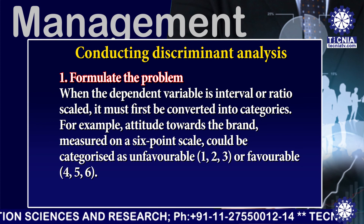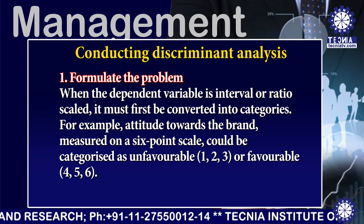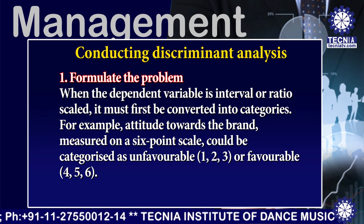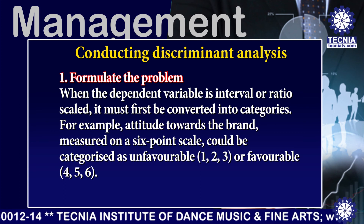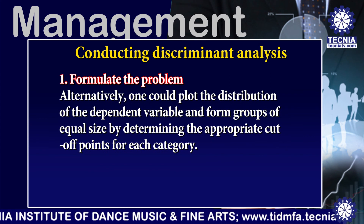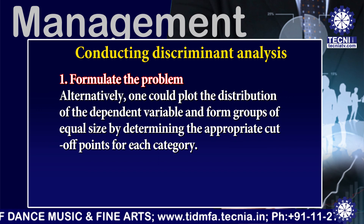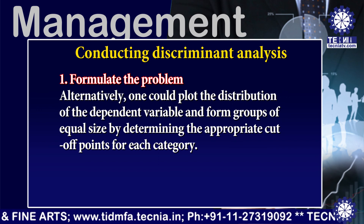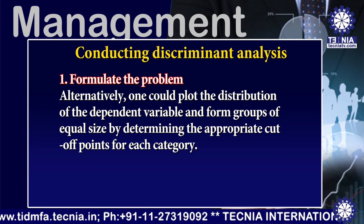For example, attitude towards the brand measured on a six-point scale could be categorized as unfavorable (1, 2, 3) or favorable (4, 5, 6). Alternatively, one could plot the distribution of the dependent variable and form groups of equal size by determining the appropriate cutoff points for each category.